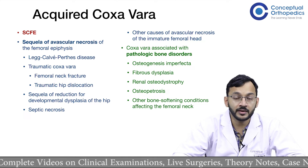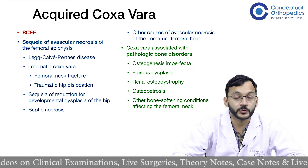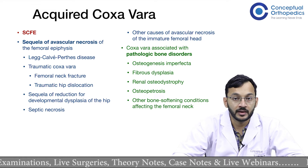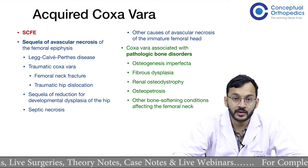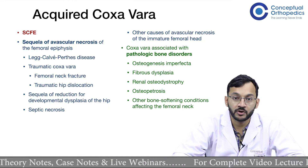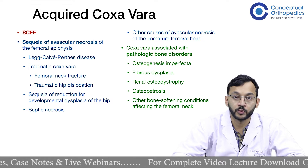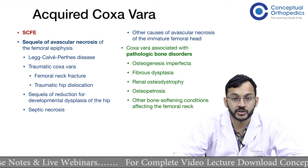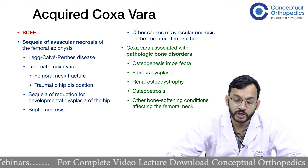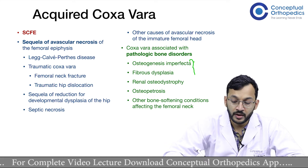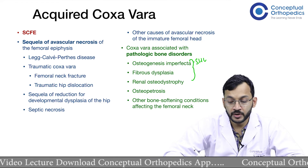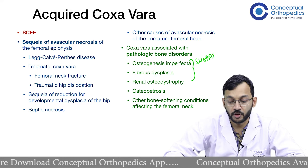Coxa vera can also be associated with pathological bone disorders such as osteogenesis imperfecta, fibrous dysplasia, renal osteodystrophy, osteopetrosis, and other bone-softening conditions affecting the femoral neck. These conditions are also known to give a shepherd's crook deformity.